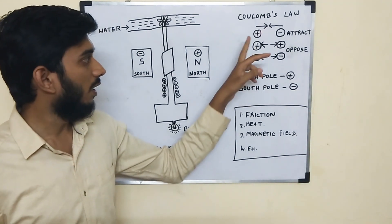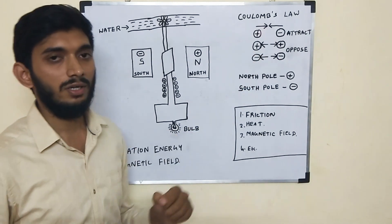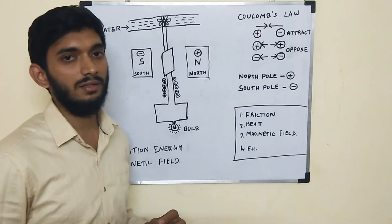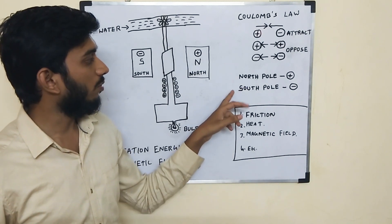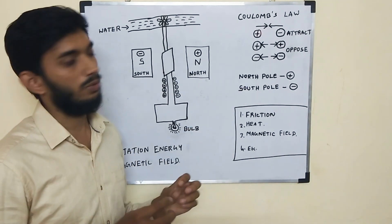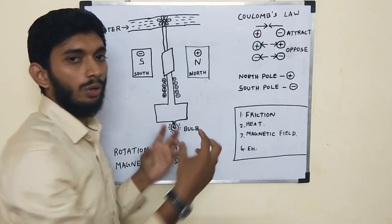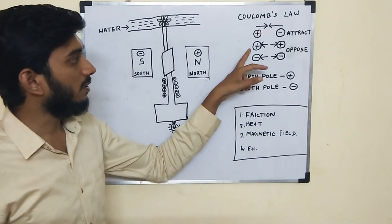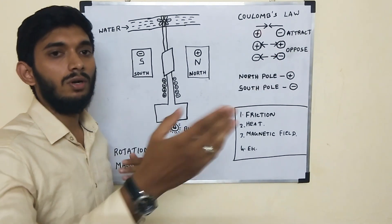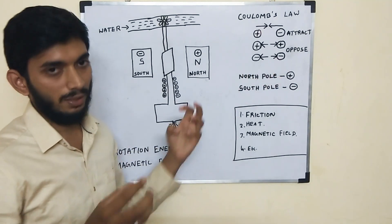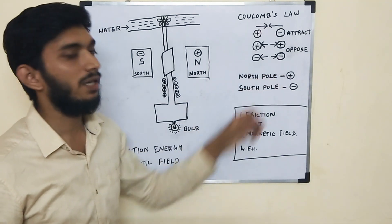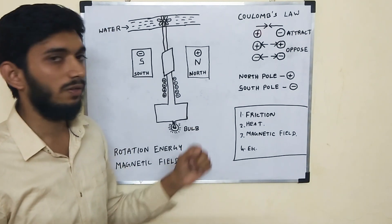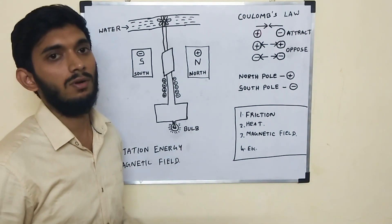That is positive energy and negative energy. This is a North Pole and South Pole. The North Pole and South Pole attract each other — that is, plus and minus attract each other. This concept is called Coulomb's Law.